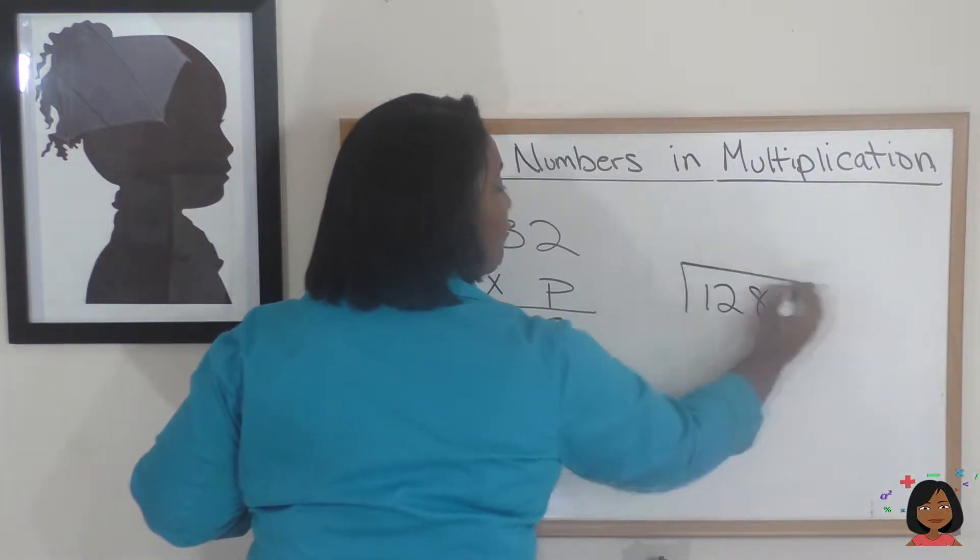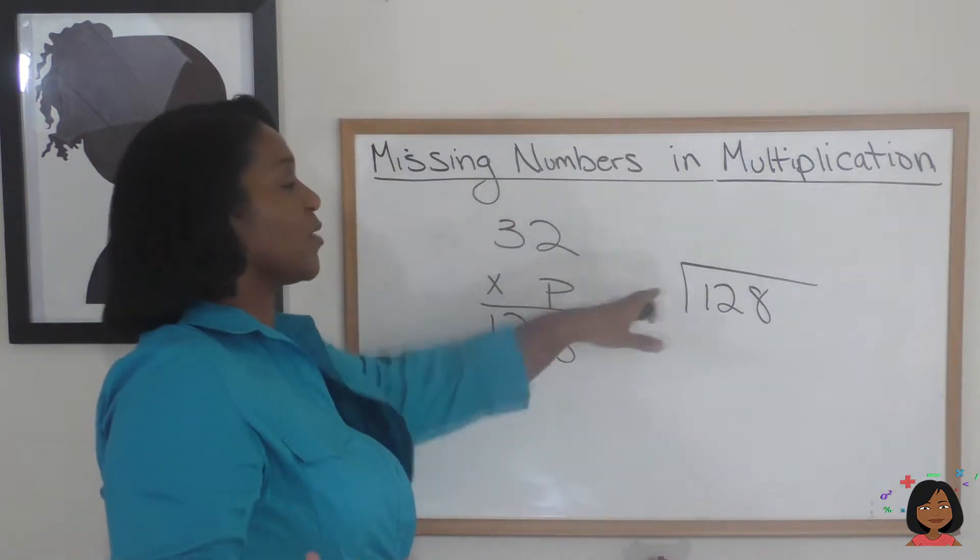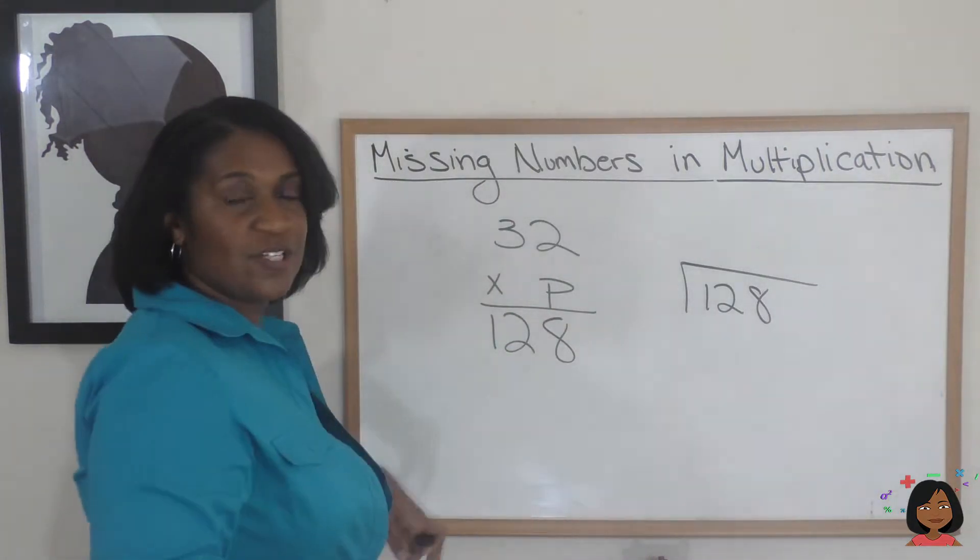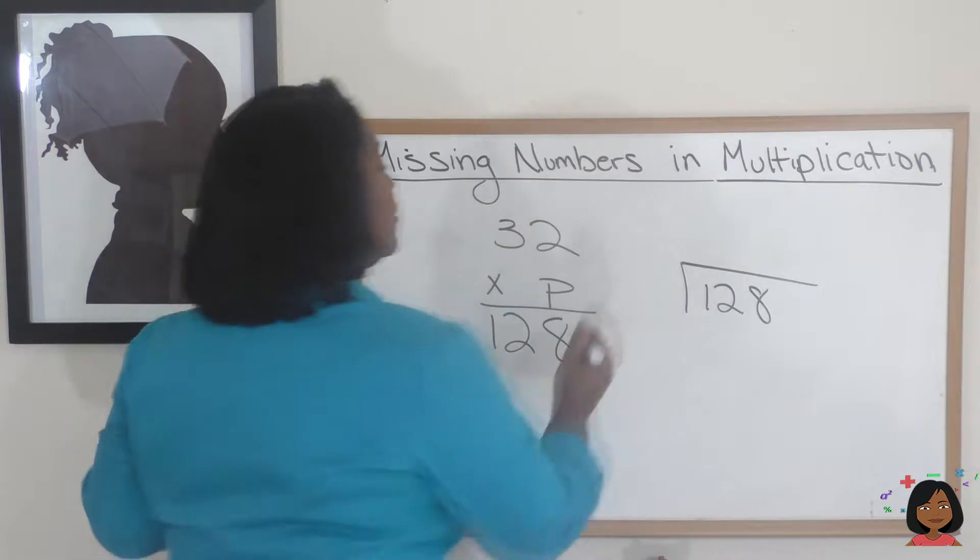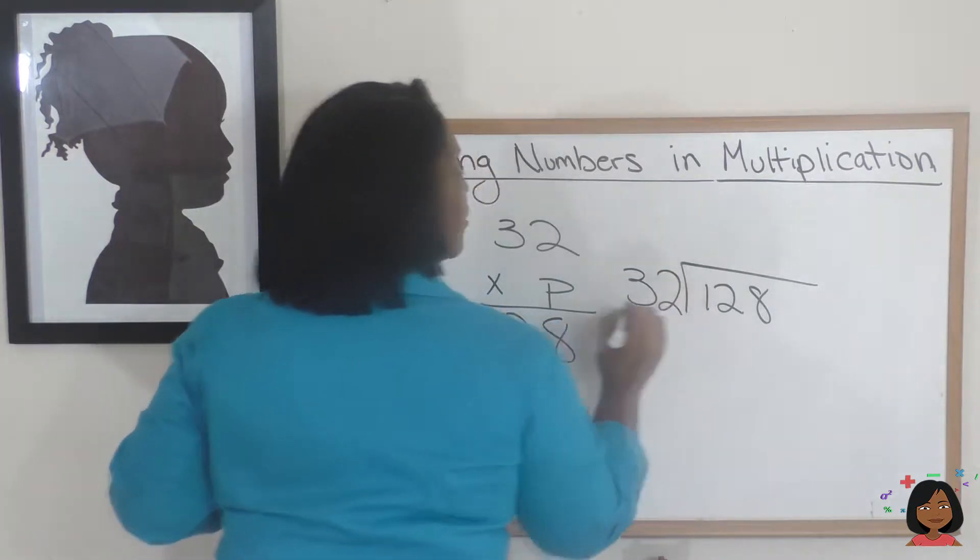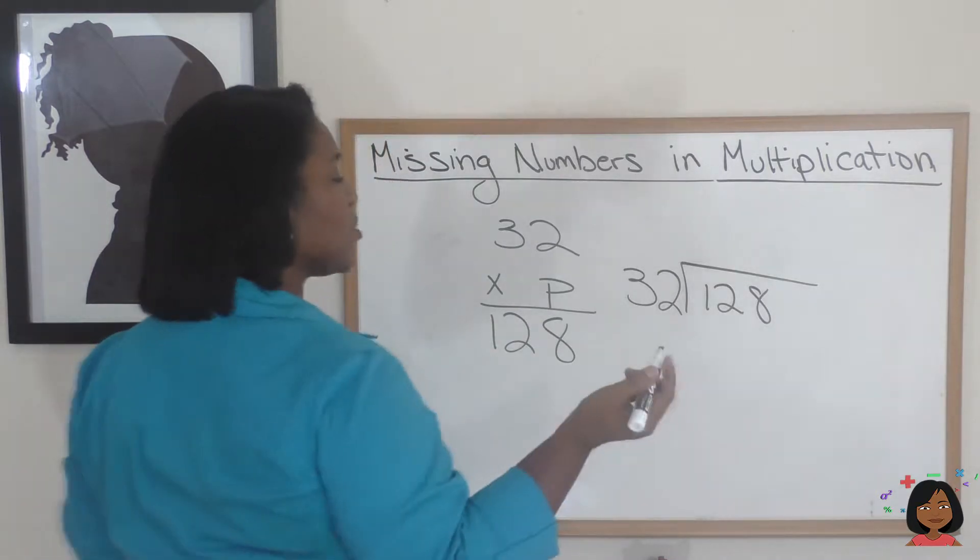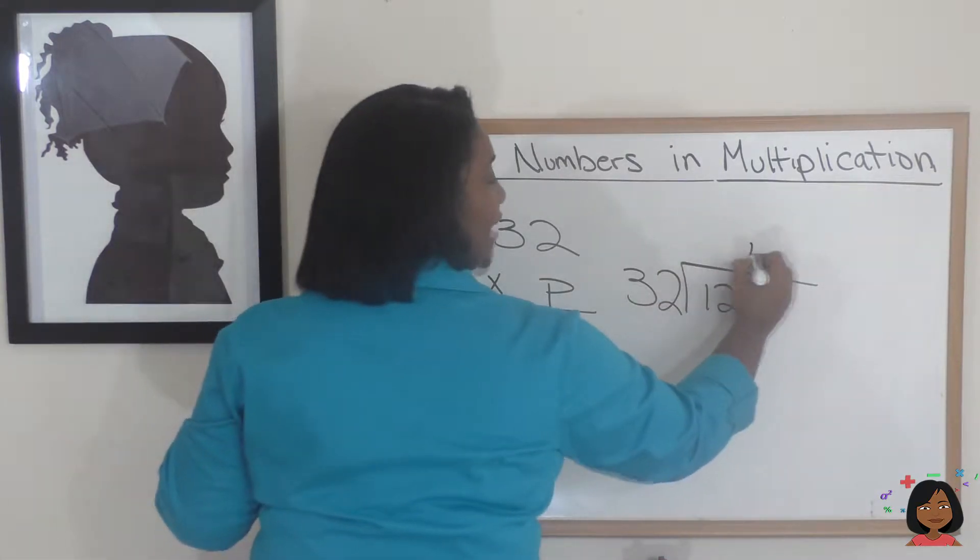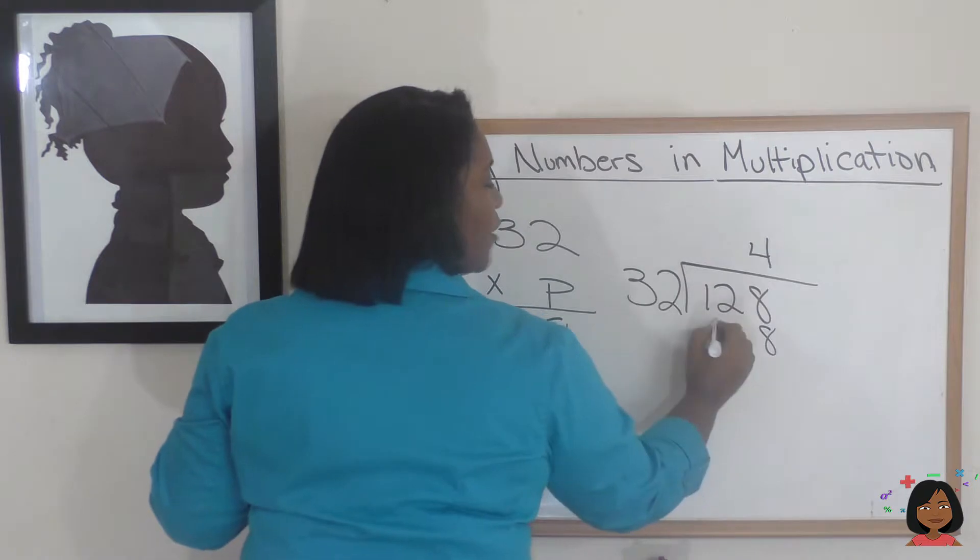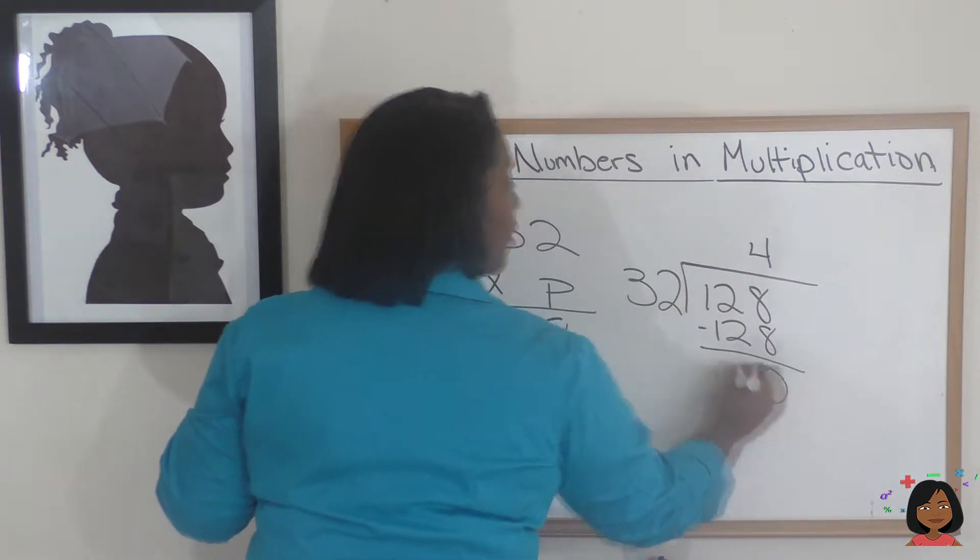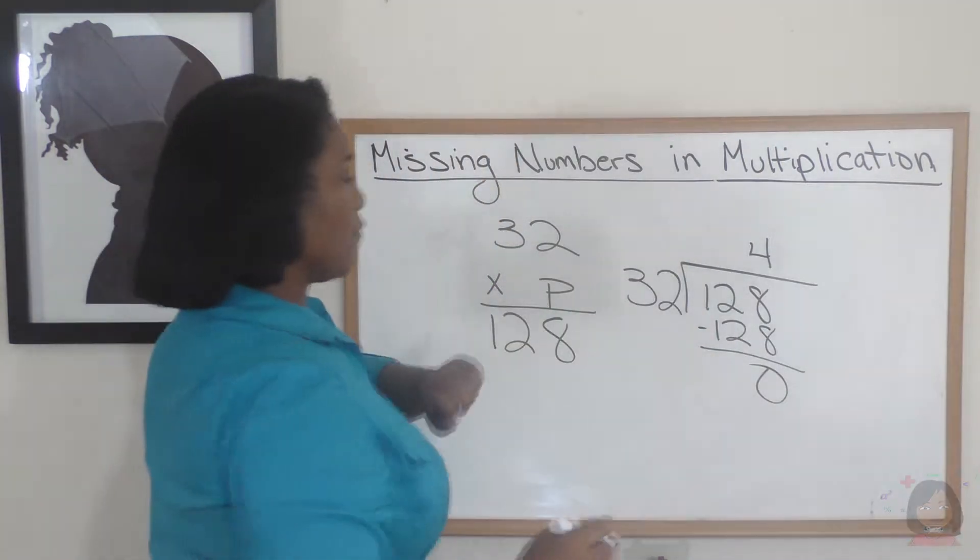We're going to start with 128, and that's going to be our dividend. Remember, the dividend just sits there, so it goes on the inside, and 32 is going to be doing the heavy lifting. 32 times what is 128? That looks like that is 4. 4 times 2 is 8, 4 times 3 is 12.